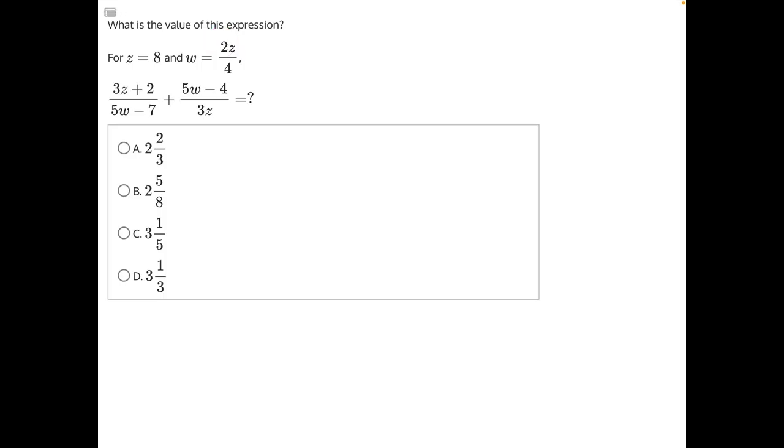So let's plug in, we have w equals 2z divided by 4, let's plug in 8 for z. So we'll have w equals 2 times 8 divided by 4, which will give us 2 times 8 is 16 divided by 4, and 16 divided by 4 equals 4.